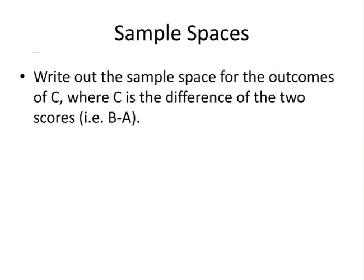Write out the sample space for the outcomes of C, where C is the difference of the two scores, B minus A. First, let's look at the best possible result for B, which is four, and the worst possible result for A, which is zero.